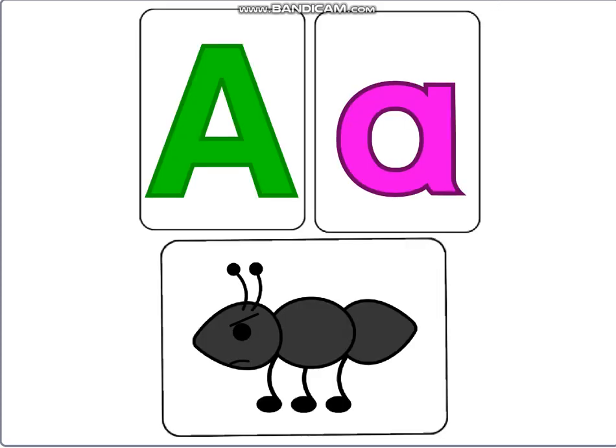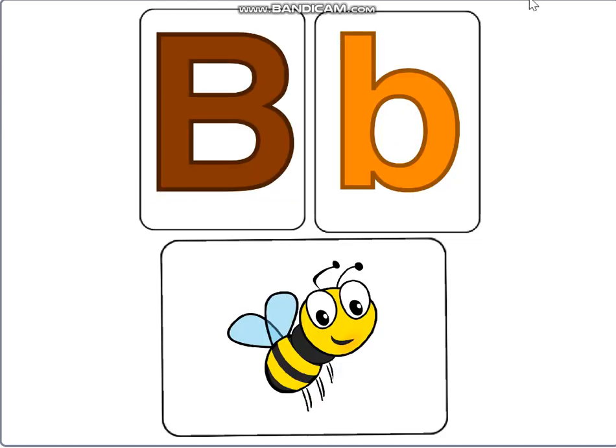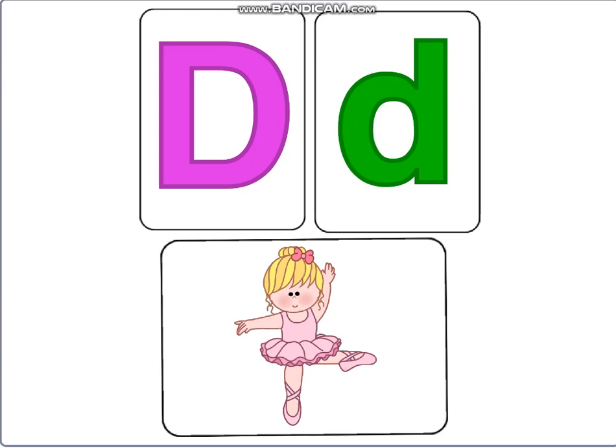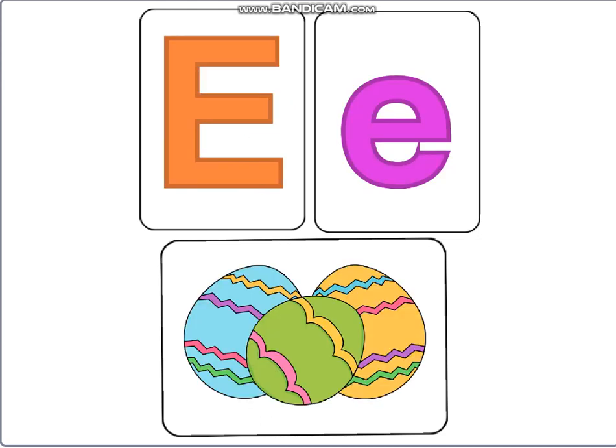A for Angry Ant. B for Busy Bee. C for Curly Crisp. D for Dancing Doll. E for Easter Egg.